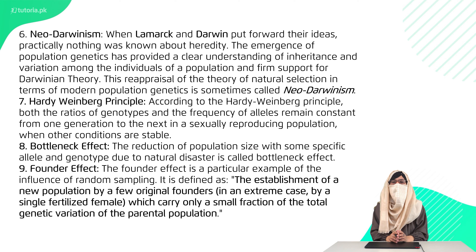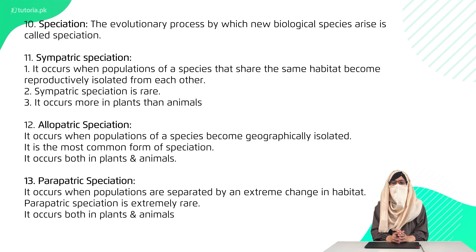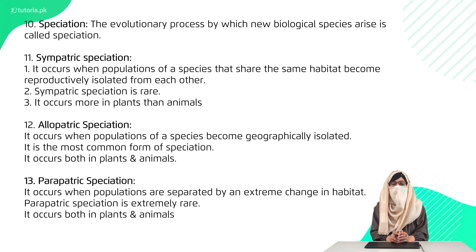The bottleneck effect is when a population is reduced due to a natural disaster, and only those who survive carry forward the remaining genes. The founder effect is when a small group of organisms moves to a new area and carries only a subset of genes from the previous population. Speciation is the formation of new species. Sympatric speciation occurs when genetic mutations and changes within a population lead to the formation of a new species without geographical isolation. Allopatric speciation is when a population is geographically separated and with the passage of time evolves into a new species. Thank you.